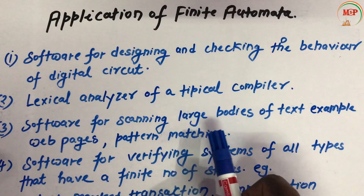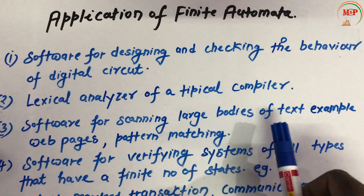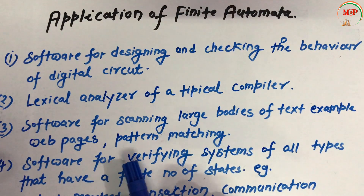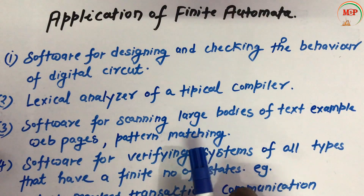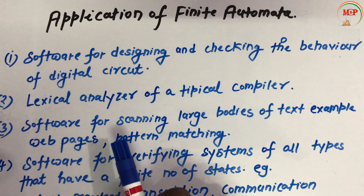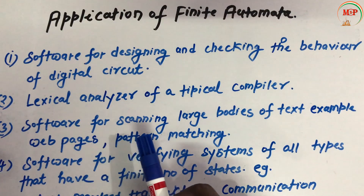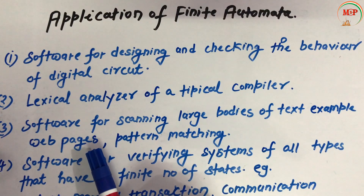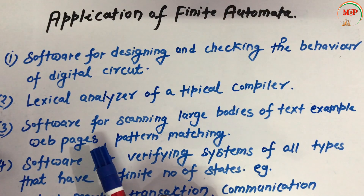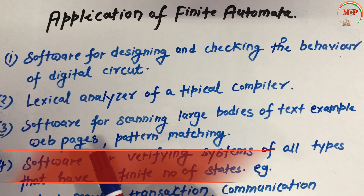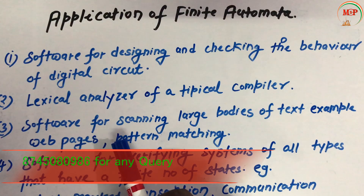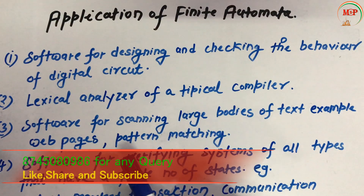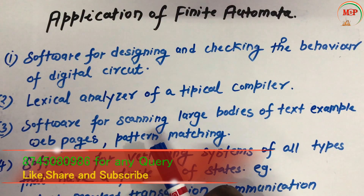The third point is software for scanning large bodies of text, for example web pages and pattern matching. This means that if we have a web page which we have to find or search, we can do it with automata.